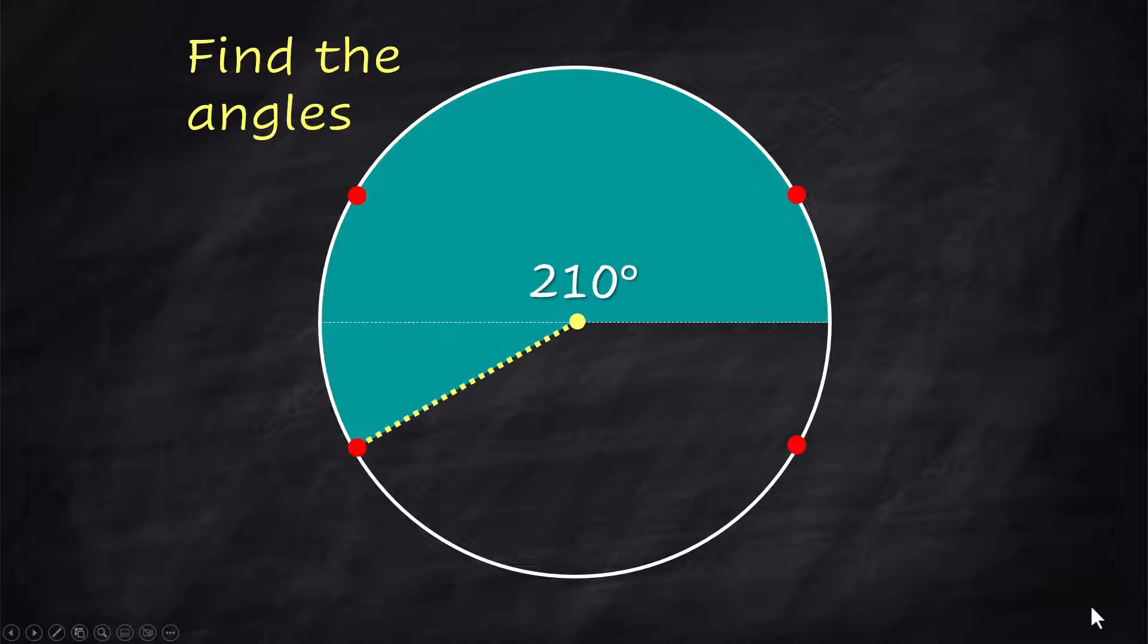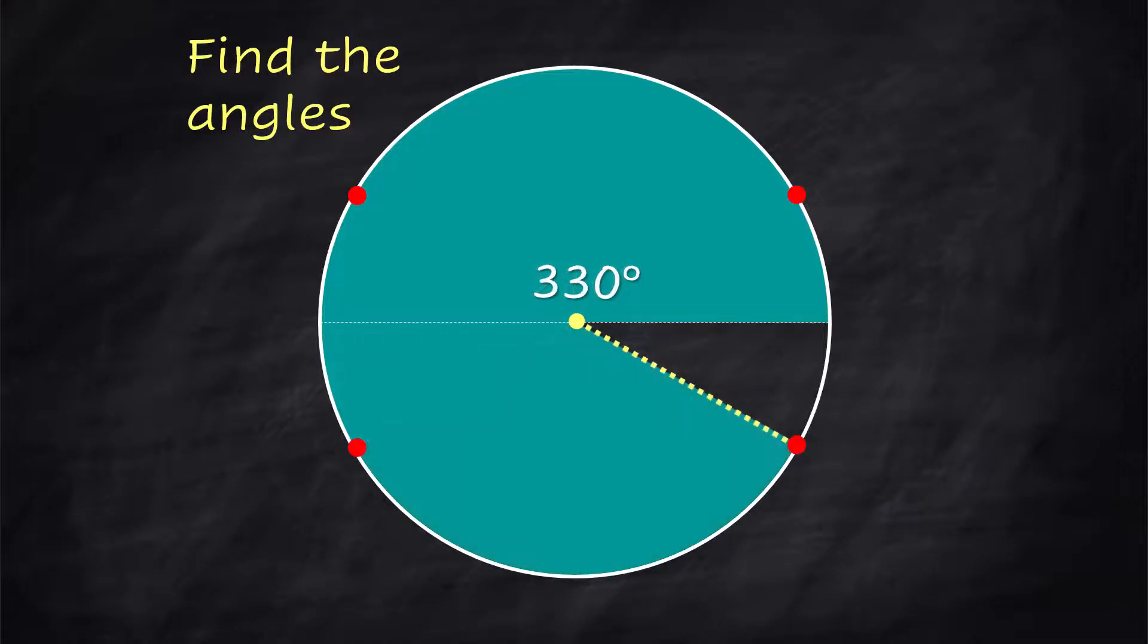That would be 150. The next one would be 210, and for this one, I want you to think about 180 plus 30 degrees. Swinging over to the fourth quadrant, this one would be 330 degrees, and I want you to think about this one as 360 minus 30 degrees.